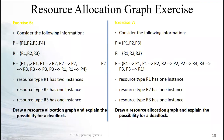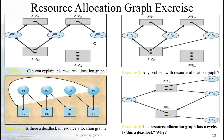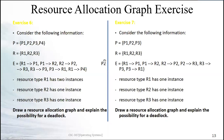For instance, R1 to P1 means resource R1 is allocated to P1, and P1 to R2 means P1 is requesting R2. If R1 has two instances, two processes can use it simultaneously. By interpreting each statement one by one, you can draw the resource allocation graph. The recommended approach is to draw processes sequentially, then place resources in between.